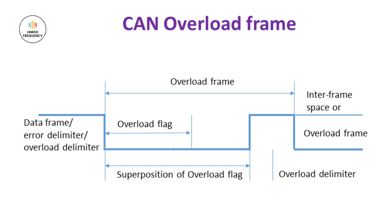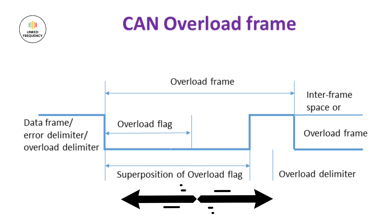Its main purpose is to communicate the overloaded state of a node and request a temporary reduction in message traffic. Once the overload frame period expires, the CAN network returns to its normal operating state and nodes resume their regular message transmission. The duration of the overload frame period is determined by the CAN implementation and varies depending on the specific system configurations. This period allows the overloaded node to catch up with its processing tasks and reduce the burden on its resources. The screen represents the overload frame for reference.